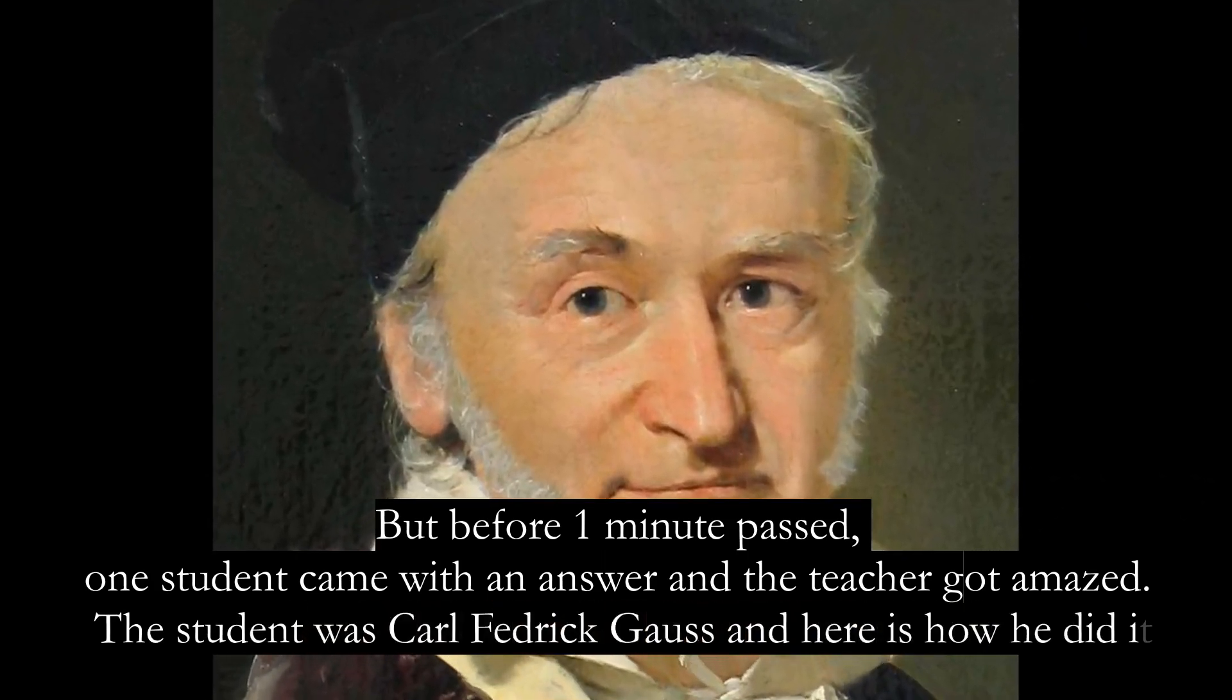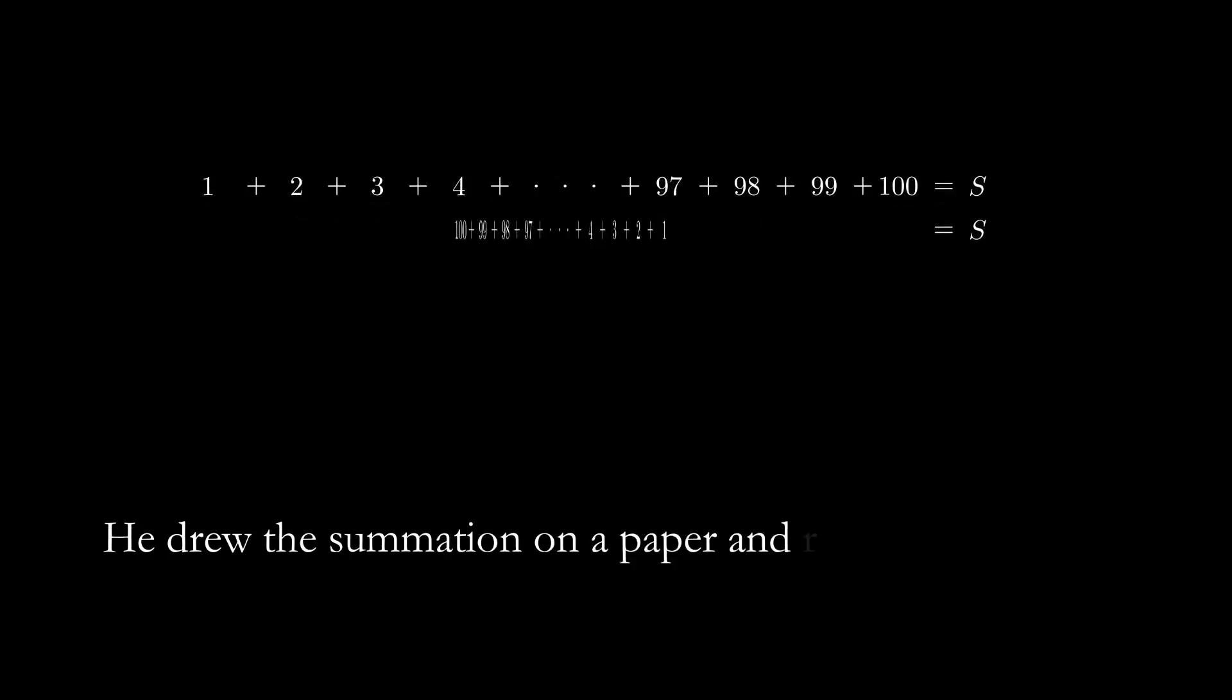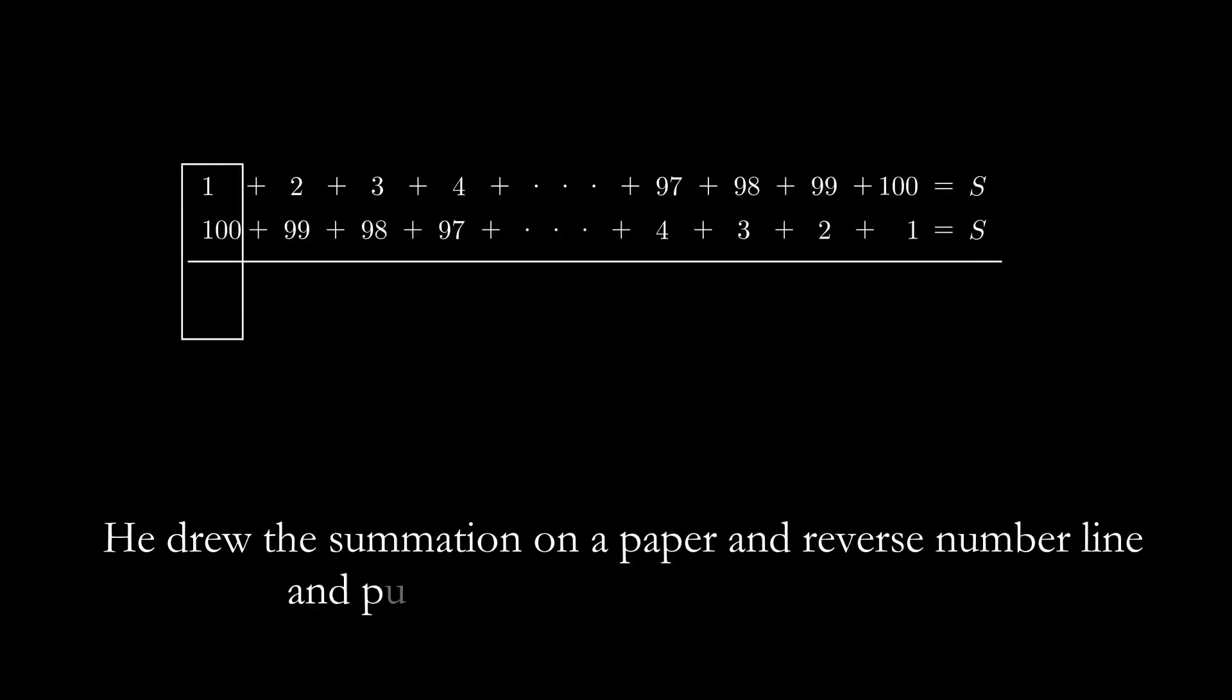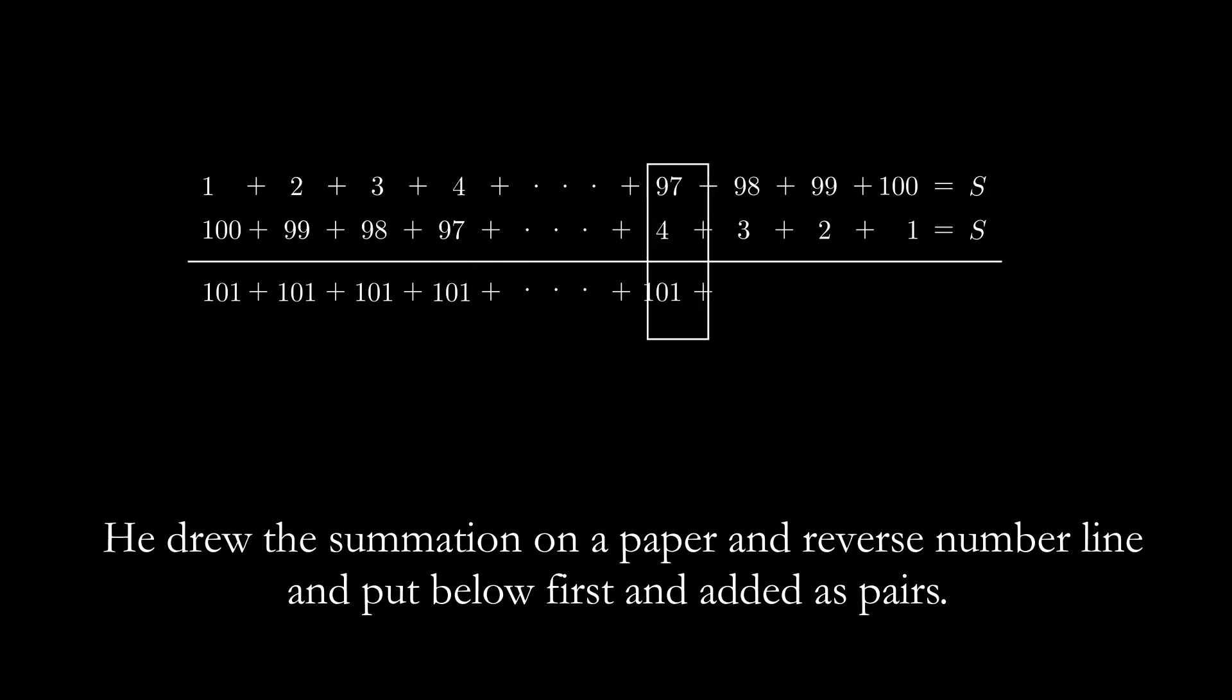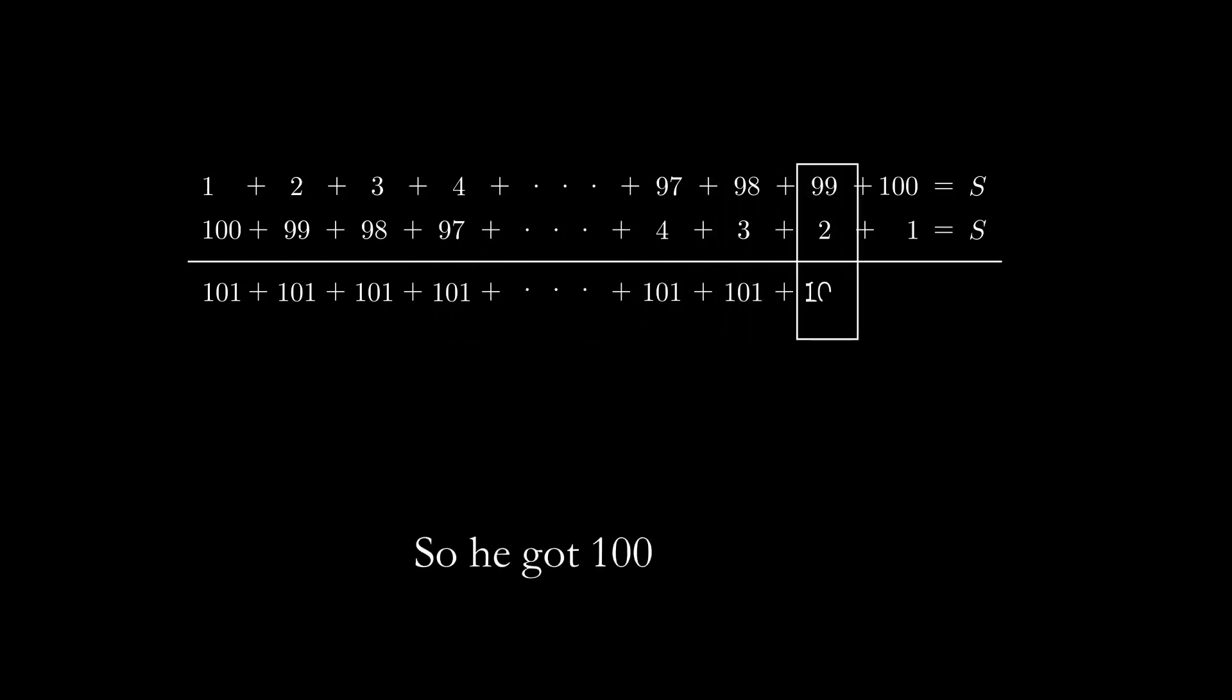He drew the summation on paper and a reverse number line below the first, and added them as pairs. So he got 100 of 101. This equals adding 1 to 100 twice.